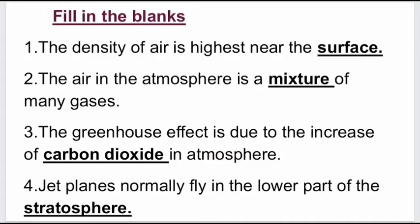Now we will see the fill in the blanks of this chapter. First: the density of the air is highest near the surface. Second: the air in the atmosphere is a mixture of many gases. Third: the greenhouse effect is due to the increase of carbon dioxide in the atmosphere. Fourth: jet planes normally fly in the lower part of the stratosphere.